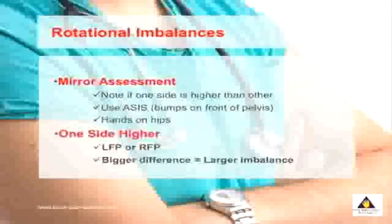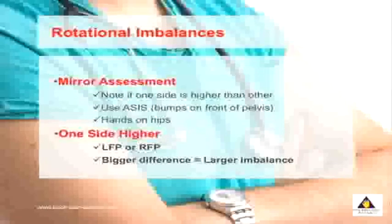If your left side is higher, you have what's called an LFP. If your right side is higher, you have an RFP. The bigger the height change, the bigger the imbalance occurring in your spine.